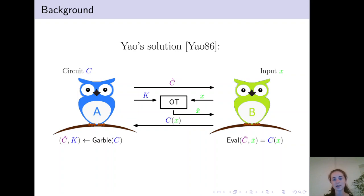Alice sends over the garbled circuit C tilde. Alice and Bob then run an oblivious transfer protocol so that Bob learns the garbled input and can evaluate the garbled circuit on the garbled input to learn C of X.